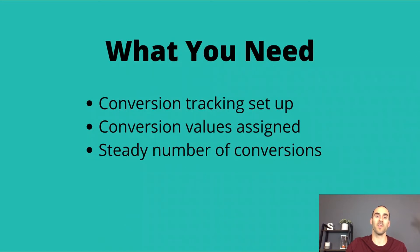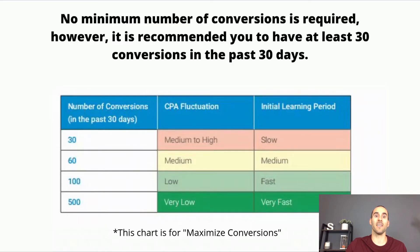There are a few things that you need. Number one, you need conversion tracking set up. Number two, you need conversion values assigned. If you're in e-commerce, the revenue value from sales needs to be passed through to Google Ads. If your business generates leads, you need to assign values to those leads for the system to optimize itself. And lastly, you need a steady number of conversions — there's no technical minimum, but the more conversions you have, the quicker the system is able to learn and adjust.